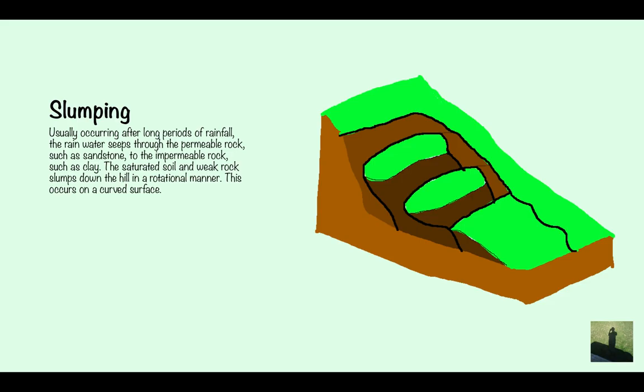Slumping. Slumping usually occurs after long periods of rainfall. The rain water seeps through the permeable rock such as limestone to the impermeable rock such as clay and the saturated soil and weak rocks slumps down the hill in a rotational manner. This happens on a curved surface. The rain water is going to get through and it's going to get to the clay or whatever impermeable rock there is and it's going to mean that this bit, the top bit, is going to slump down the rock face and it's going to do it while turning. So that's what slumping is.